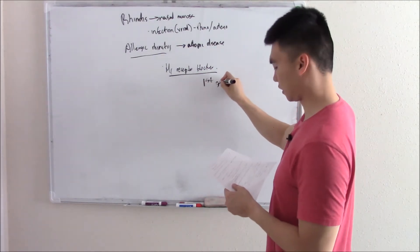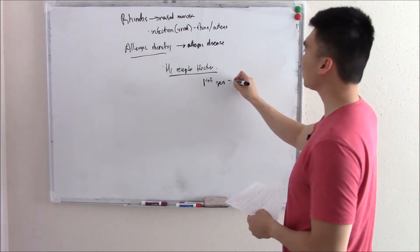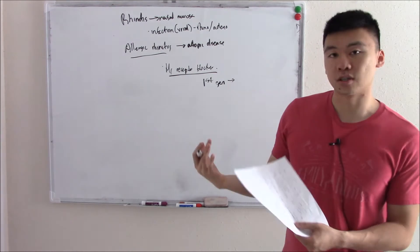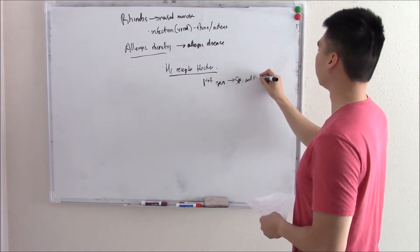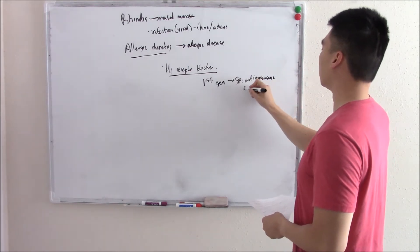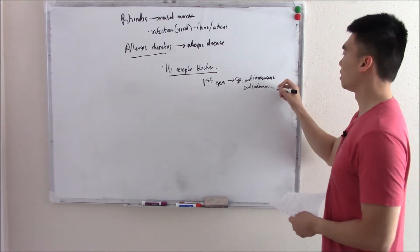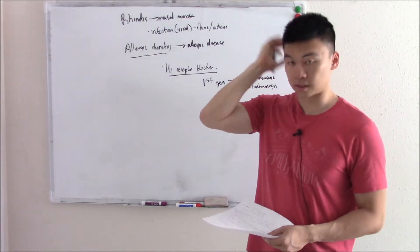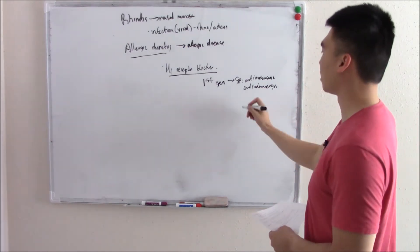Now the first generation that came out wasn't too specific for H1. So it started blocking other things like your muscarinic receptors, your adrenergic receptors. So side effects included things like anti-muscarinic, that's your dry mouth, anti-adrenergic causing hypotension. And it can also cross into your central nervous system. Block histamine there. And when you block histamine there, you get things like sedation.